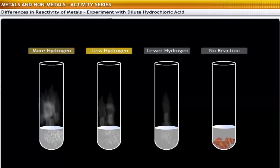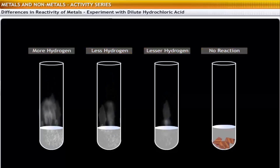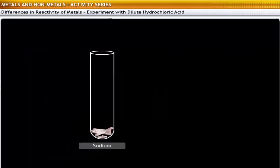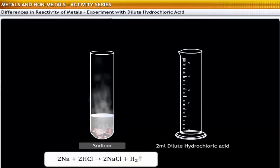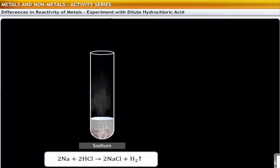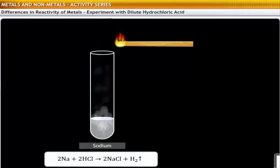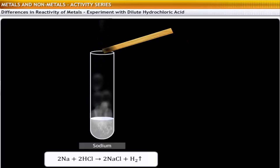However, you will notice that the rate at which the gas is liberated in each test tube is different. For instance, adding 2 ml of dilute hydrochloric acid to sodium results in a vigorous liberation of hydrogen gas. If you hold a burning splinter over the mouth of the test tube, the flame is extinguished with a pop sound.